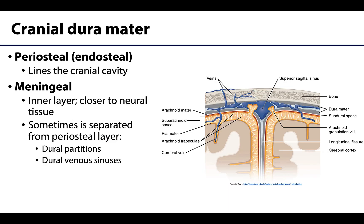Let's talk a little bit more about the cranial dura and its two separate divisions, as this is unique to the cranial dura. First and foremost there is the periosteal dura mater — sometimes referred to as the endosteal dura — which will line the cranial cavity, so it is actually adhering to the internal surfaces of the bone. There is not a space right here between the periosteal dura and the bone.